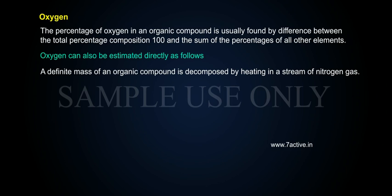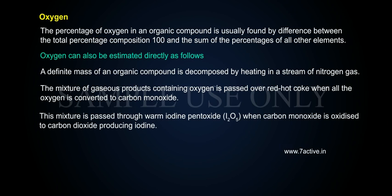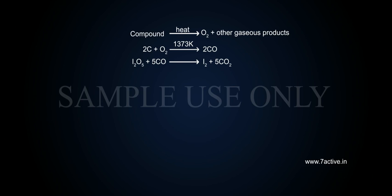A definite mass of an organic compound is decomposed by heating in a stream of nitrogen gas. The mixture of gaseous products containing oxygen is passed over red-hot coke, when all the oxygen is converted to carbon monoxide. This mixture is passed through warm iodine pentoxide, I2O5, when carbon monoxide is oxidized to carbon dioxide, producing iodine. Reactions: 2C + O2 → 2CO (at 1373 K); I2O5 + 5CO → I2 + 5CO2.